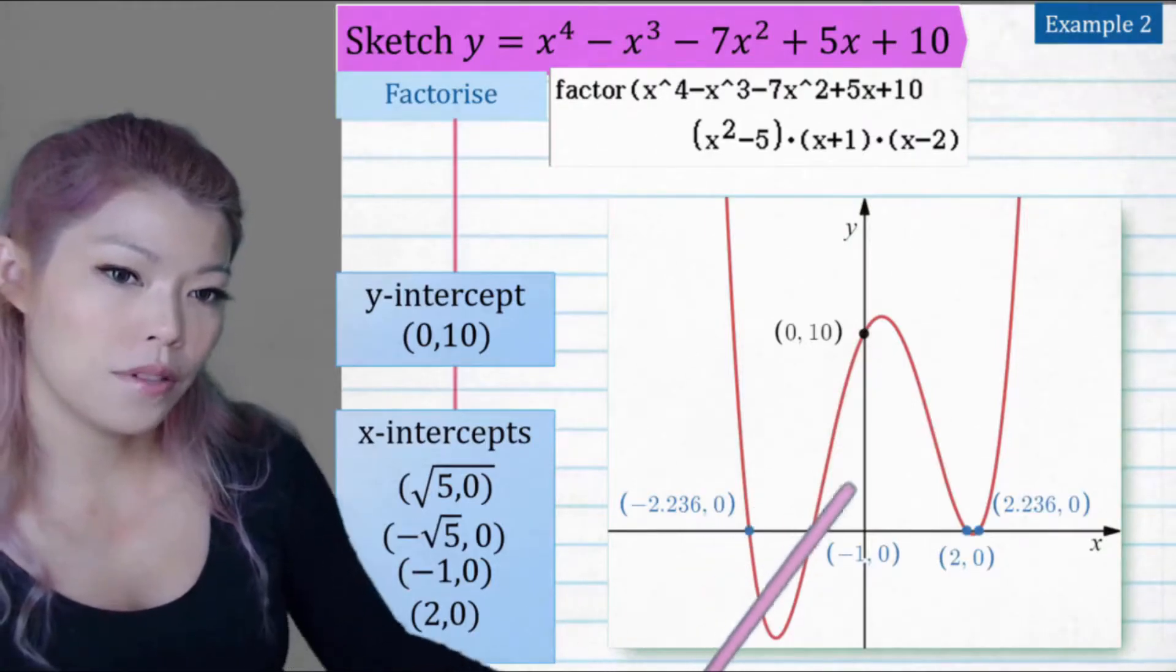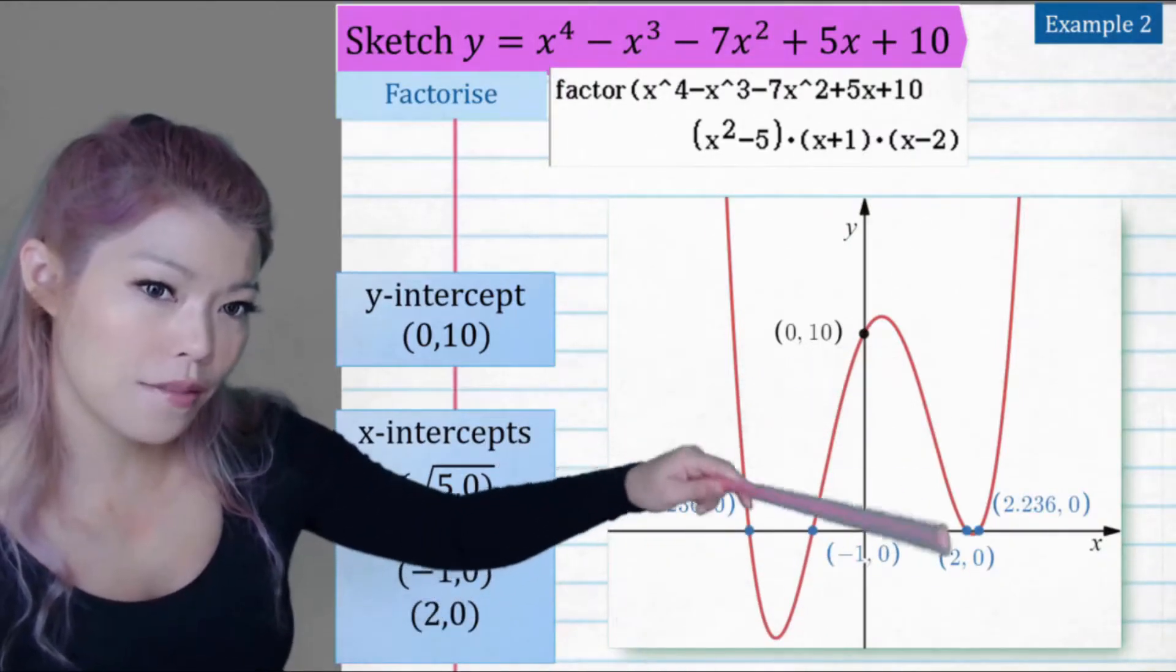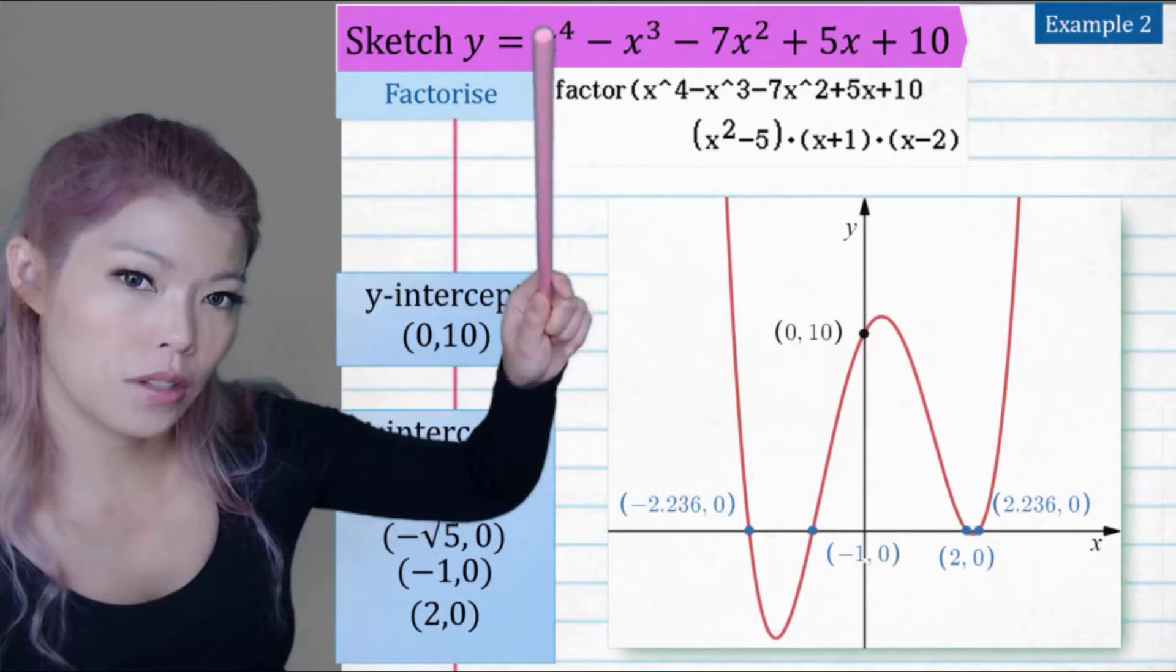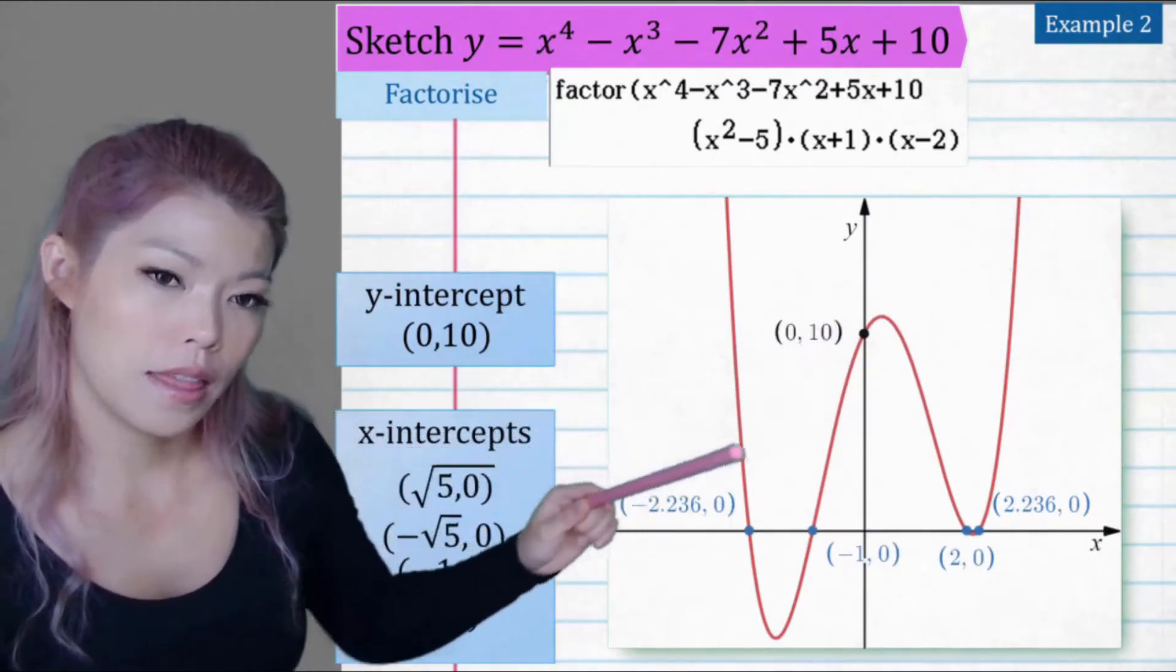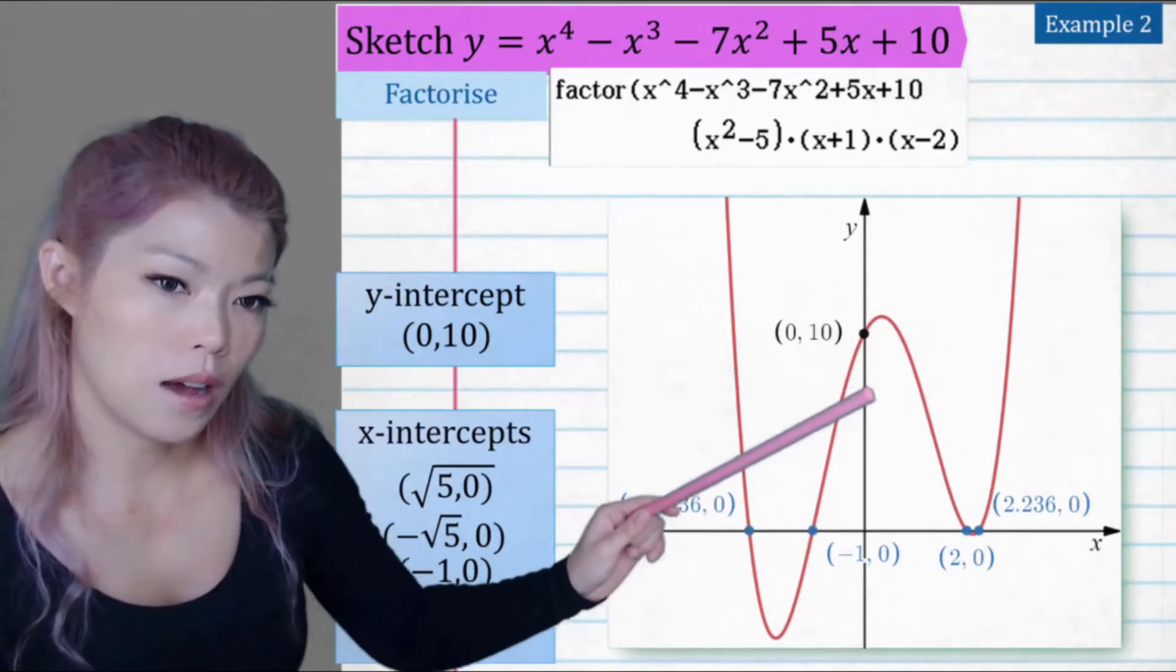So our graph looks like 4 intercepts and it's a positive graph. So look for the biggest term, x to the power of 4 is positive, so the graph is positive. And then 4 intercepts and our y intercepts.